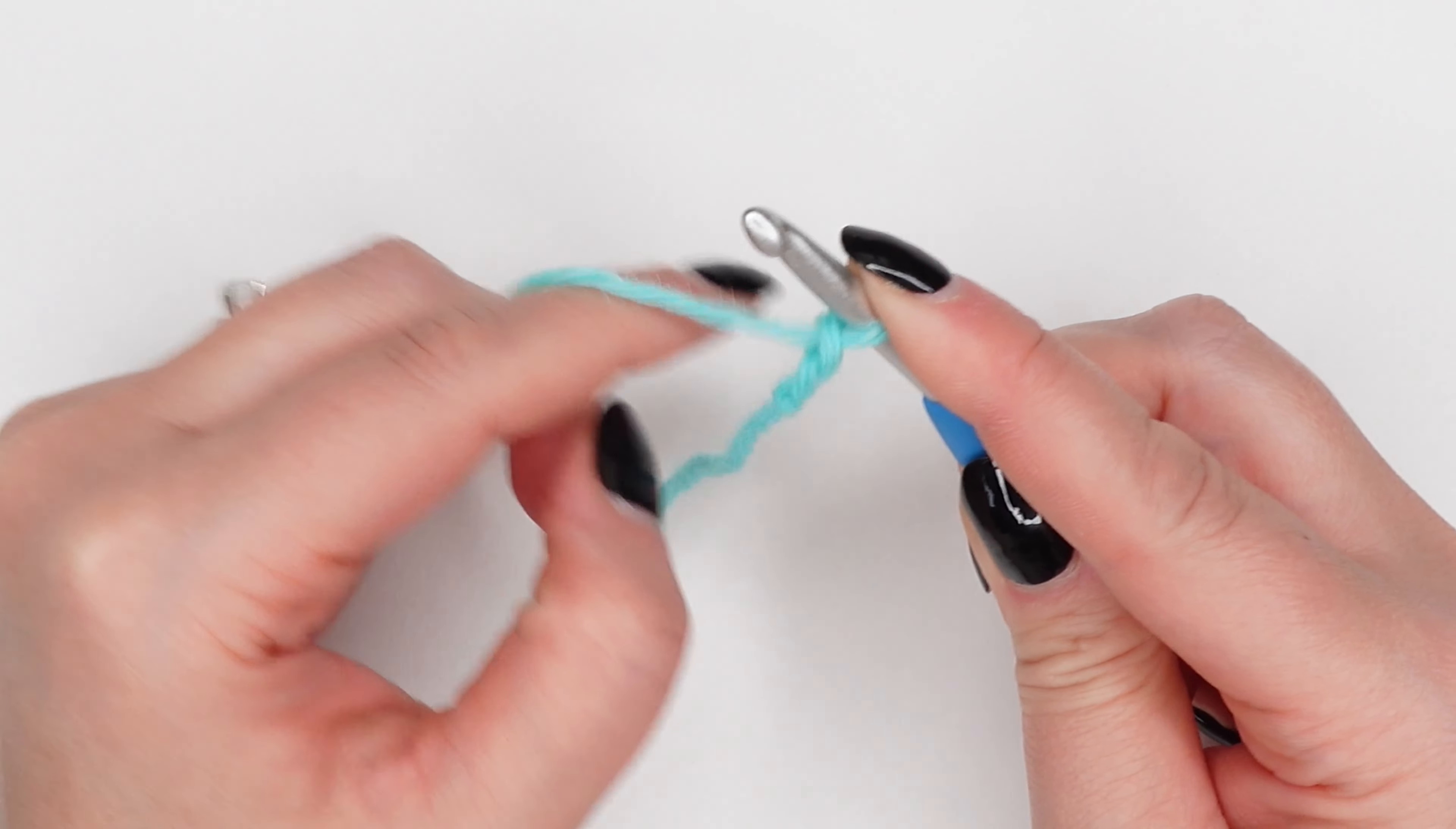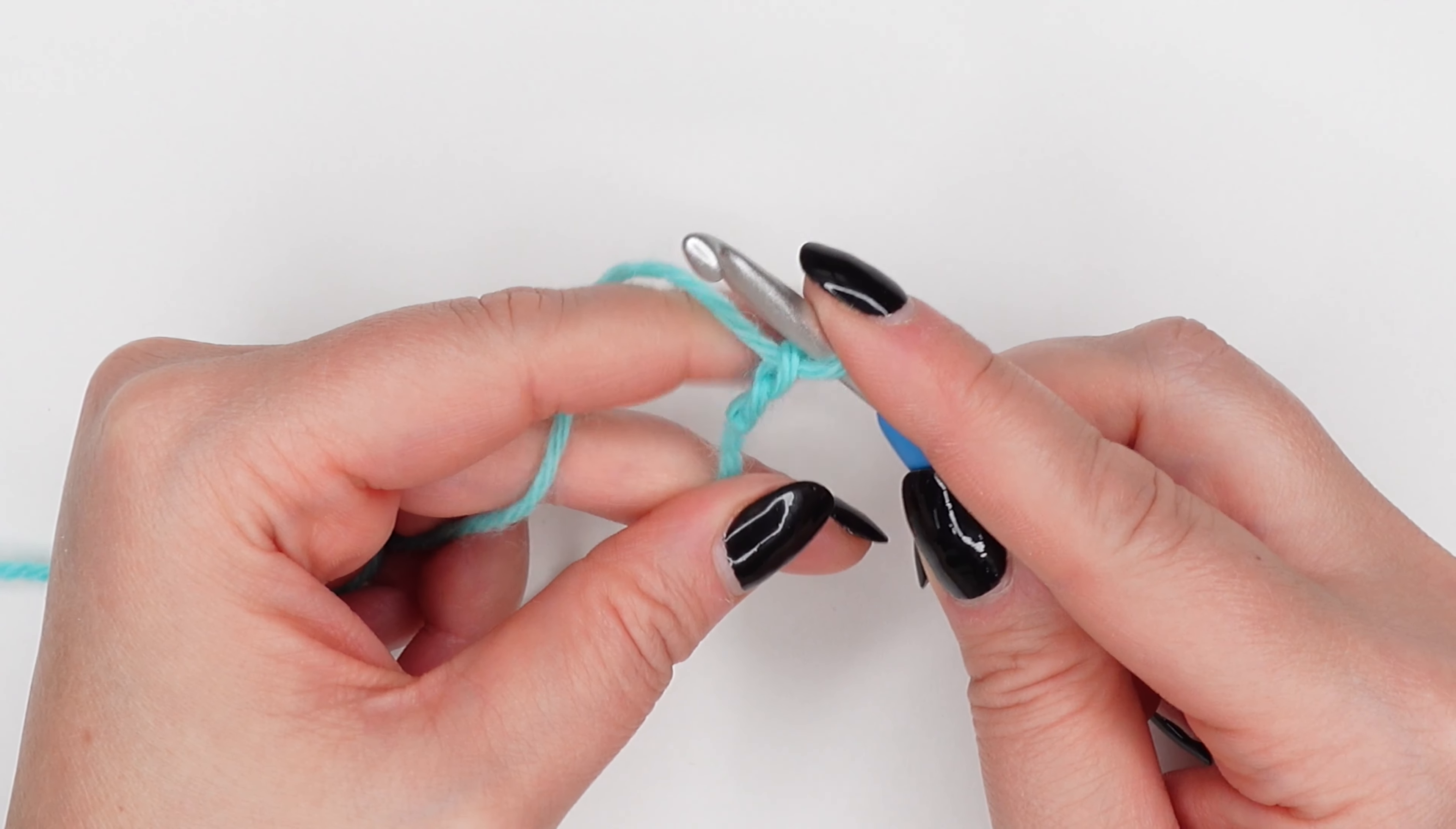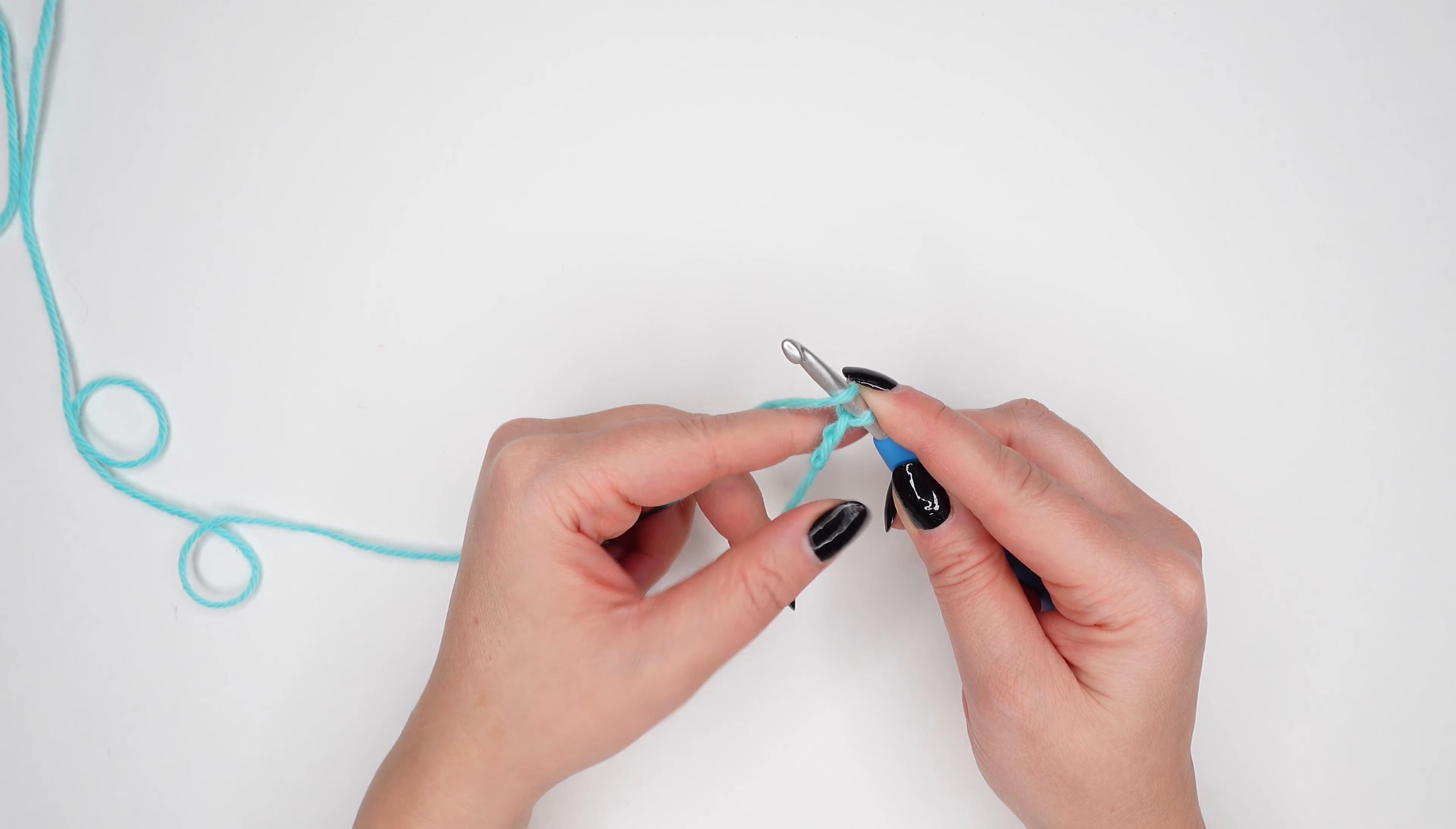After you make a chain, you want to maintain its size and not accidentally pull it too tight. You can do this by using your pointer finger to hold the loop on your hook in place. The goal is for all of your chains to be the same exact size.